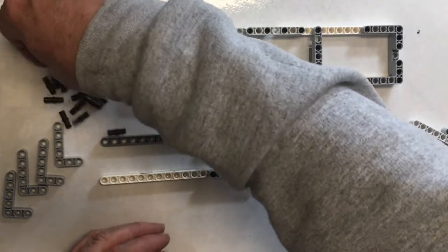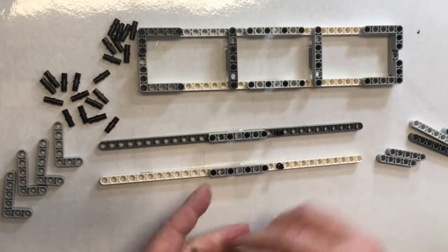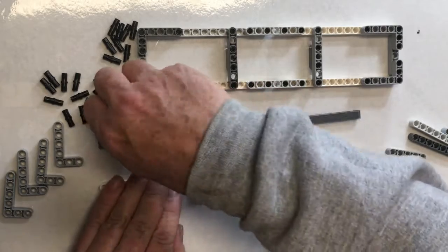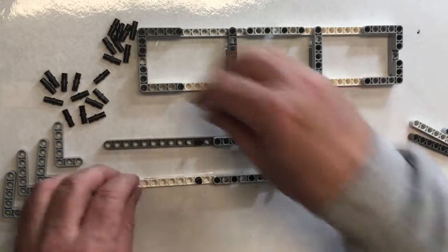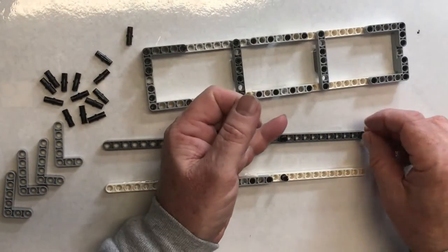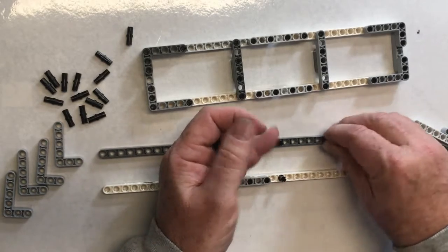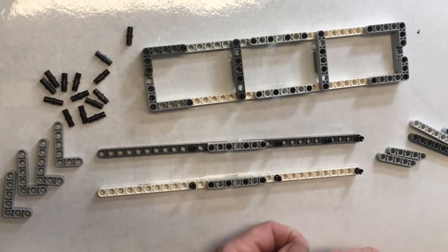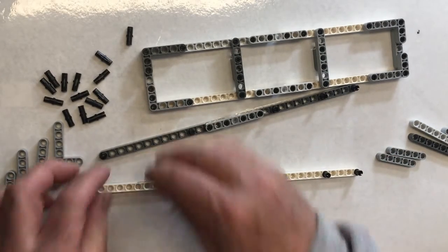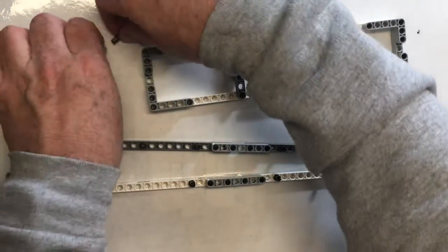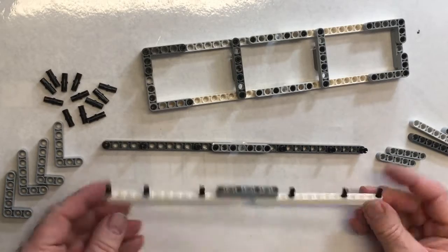Then I'm going to put some more pegs in. I'm going to skip a hole, put a peg, skip a hole. Then: skip three, peg in end hole, skip three, put a peg in end hole, skip three, put a peg in end hole, skip three, put a peg. So they're both the same.